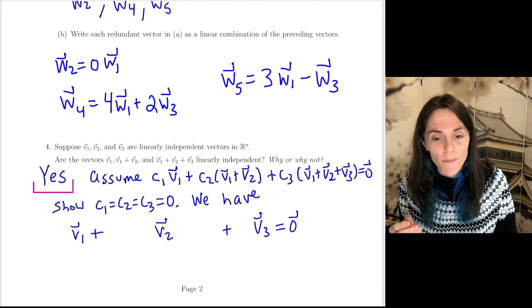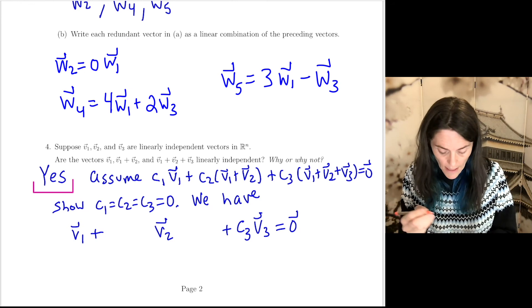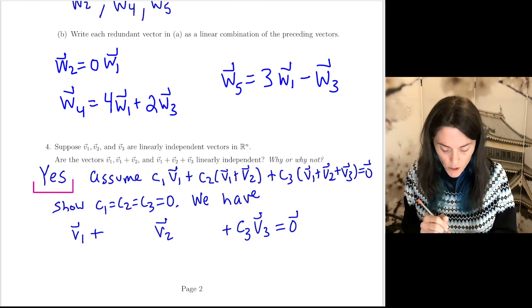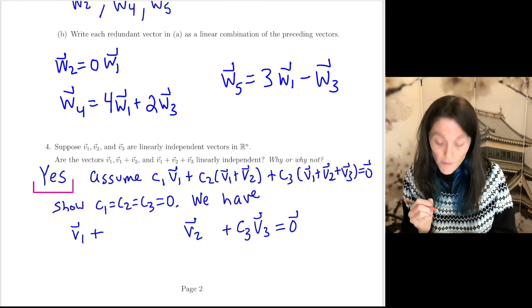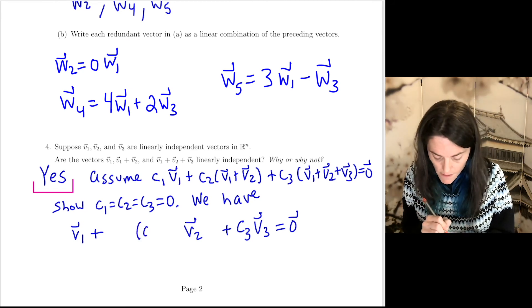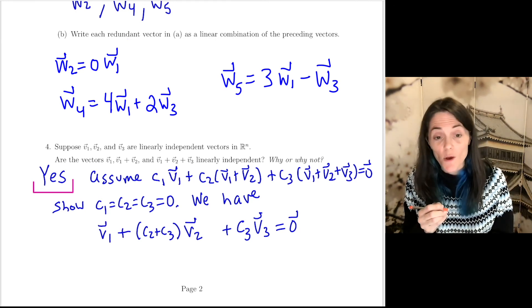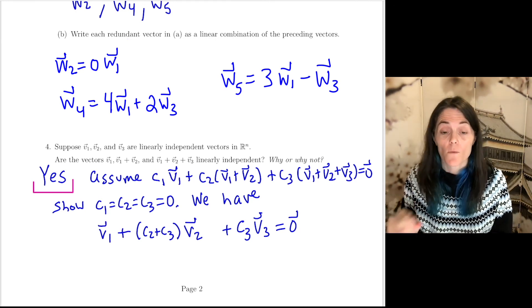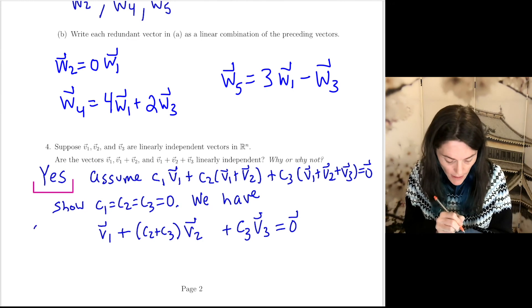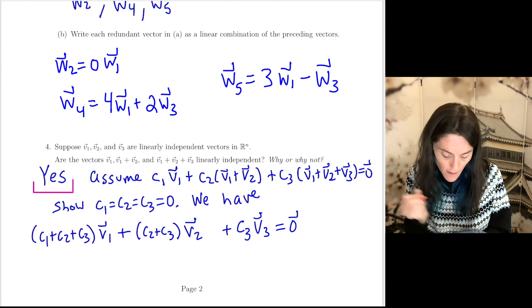So what do I have here? The coefficient in front of V3 is just C3. And the coefficient in front of V2, we have C2 plus C3 times V2. And the coefficient in front of V1, we have C1 plus C2 plus C3.